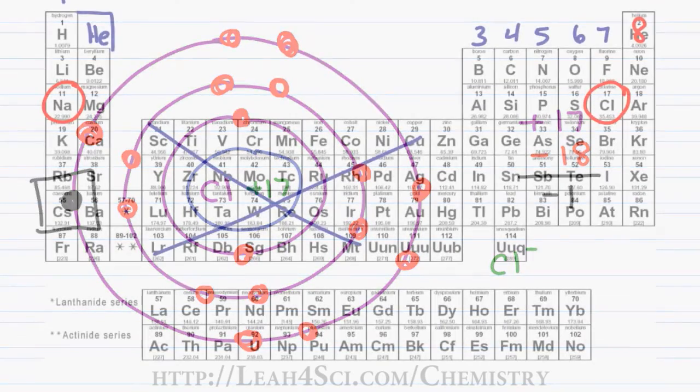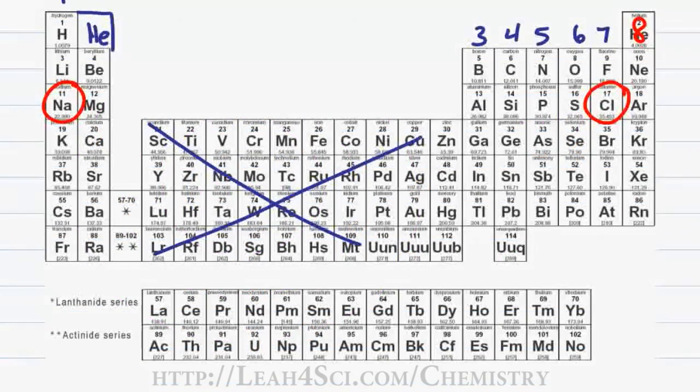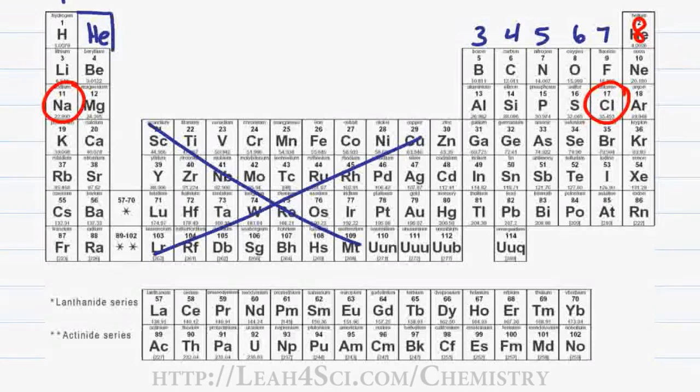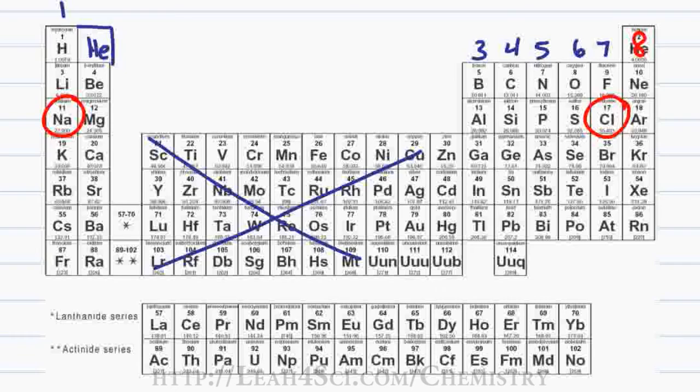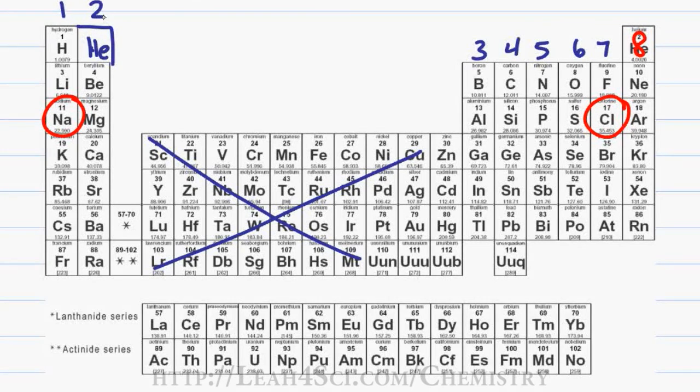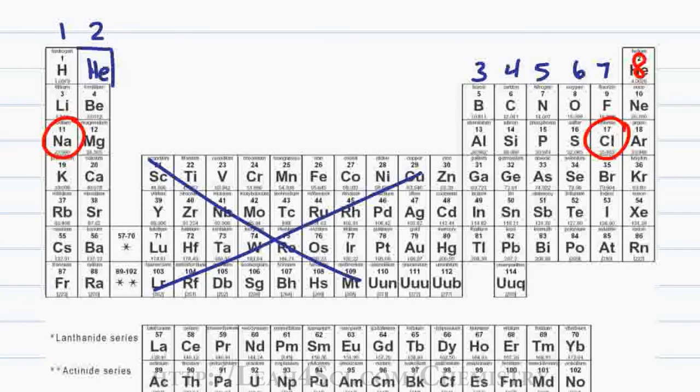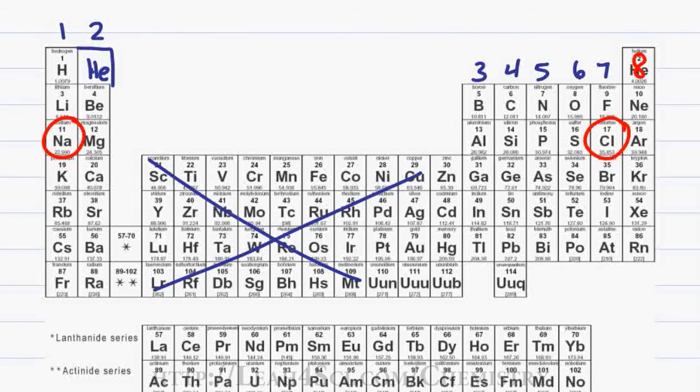If you understand what I've shown you, you can now apply this to every single atom within the group A elements. However, on an exam you're not going to have time to actually go and calculate each one. So let me show you a trick that has to do with the valence electrons on the periodic table. If an atom has 1 valence electron like the sodium atom we looked at, that means it has 1 electron that it can give away to revert to the shell that's underneath for a complete octet. And that means group 1 is going to form plus 1 ions.